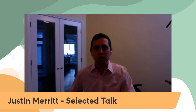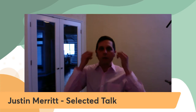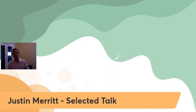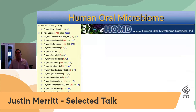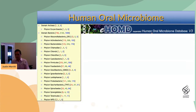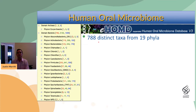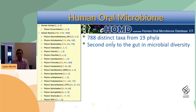Thank you for inviting me to talk about some of our recent research. My lab works on the human oral microbiome, and the human oral microbiome database now has about 788 distinct taxa from 19 different phyla that exist in the oral cavities of humanity. It's an extremely diverse environment — in the human body, the oral cavity is second only to the gut in terms of overall microbial diversity.